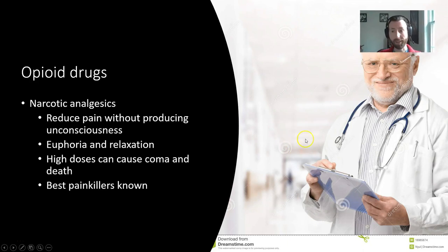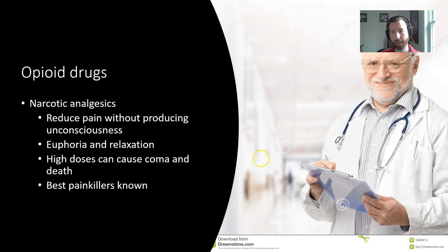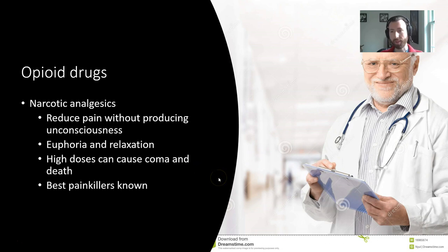Opioids are narcotic analgesics, so they reduce pain without producing unconsciousness. Especially at higher doses, they produce euphoria and relaxation. At very high doses, we can see coma and death via respiratory depression, but we'll talk more about that later on. These are still in use because, despite the risks and the negatives, they are the best painkillers known — they're extremely effective analgesics.